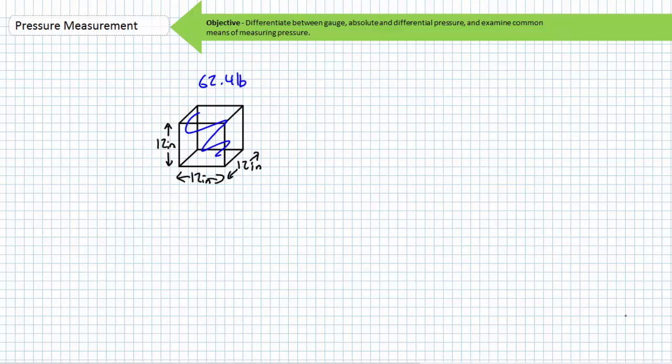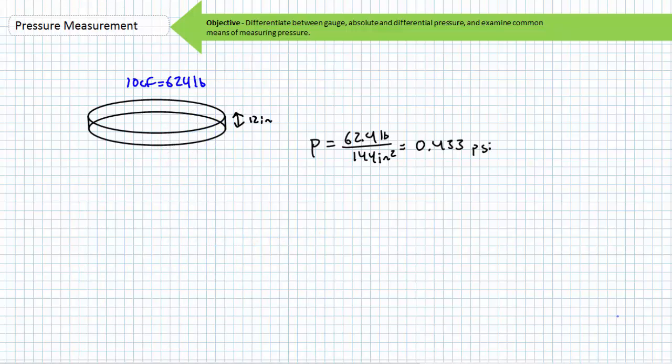Consider a cubic foot of water weighing approximately 62.4 pounds. Given this cubic foot of water distributes the weight evenly over the 12 inch by 12 inch bottom surface of the cube, it can be said a cubic foot of water exerts a pressure of approximately 0.43 PSI. What is interesting to note is that it is not the size of the pool that influences pressure on the bottom surface, only the pool's depth.